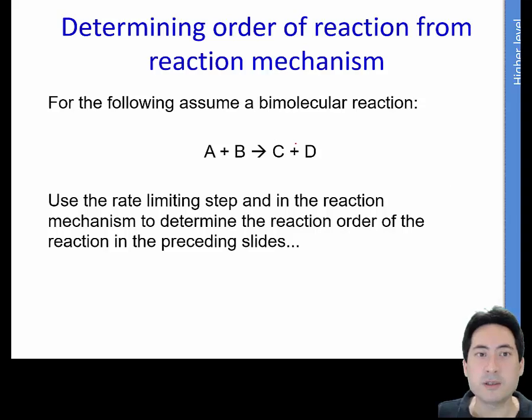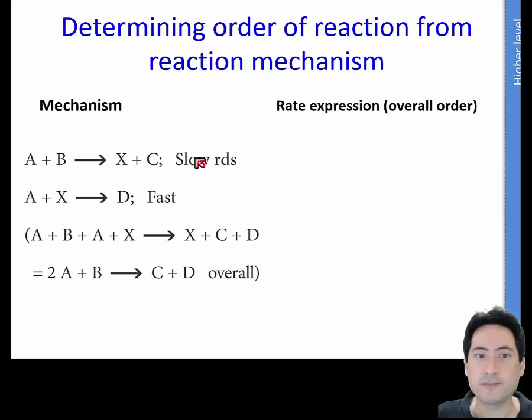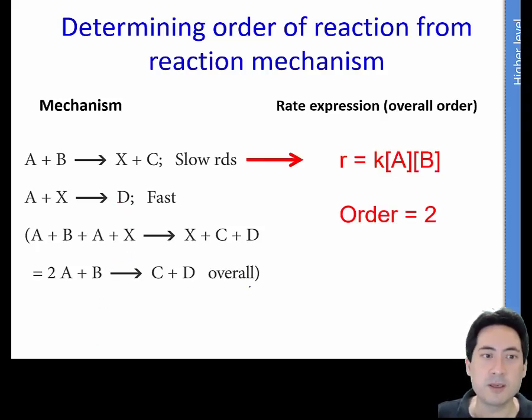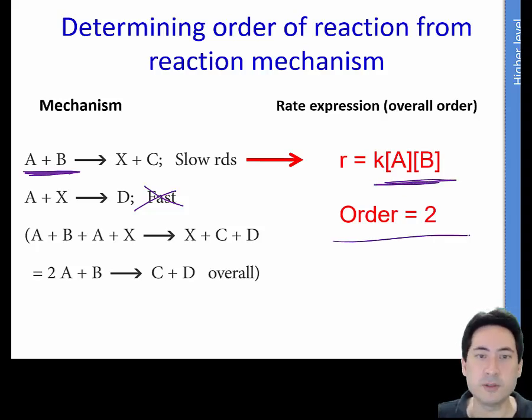So how do we determine what the reaction mechanisms are? Here are a few examples. So here we have a slow reaction here and a fast reaction. So what we do is we just worry about the slow reaction. Always don't worry about the fast because that's not going to be the one that slows us down. And it's just a simple A plus B. So that's how we work it out. We just write the concentrations of A and B, and that's an overall order of 2.